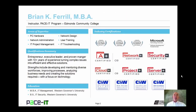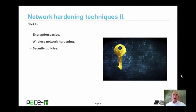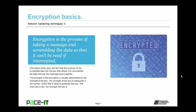Good day, I'm Brian Farrell, and welcome to PACE IT's session on Network Hardening Techniques, Part 2. Today we're going to talk about encryption basics, wireless network hardening, and conclude with a brief discussion on security policies. Encryption is the process of taking a message and scrambling the data so that it can't be read if intercepted. Encryption relies upon the receiver having the proper key to unscramble the data. The strength of the encryption is usually determined by the strength of the key, measured in the number of bits used to generate it — the more bits, the stronger the key. There are two basic types: symmetrical encryption, where both ends use the same key, and asymmetrical encryption, where two different keys are used in a PKI — Public Key Infrastructure — arrangement.